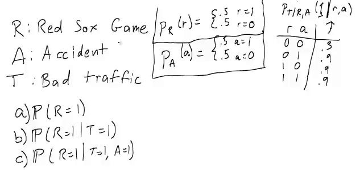R is the event that is a Red Sox game, A is the event that is an accident downtown, and T is the event that there is unusually bad traffic. So P(R) is 50-50, equally likely to be 1 or 0. P(A) is also 50-50, so equal 50-50 chance of having a game, independently 50-50 chance of having an accident.